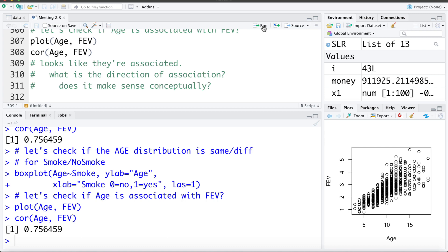And again if we think about it what would be the direction of this association? Well lung capacity or FEV can't have an effect on your age. It's got to be that age has an effect on FEV. As kids get older their lung capacity gets larger.